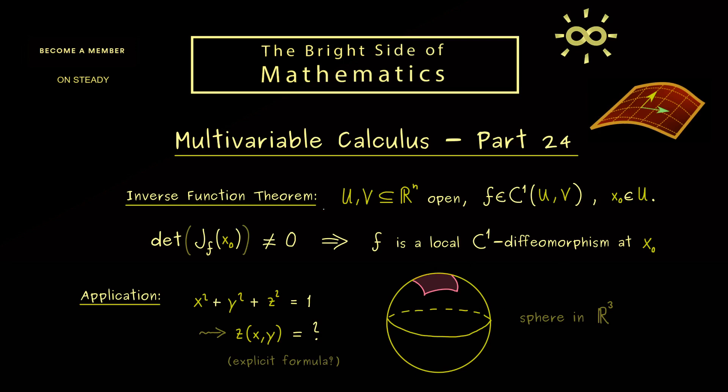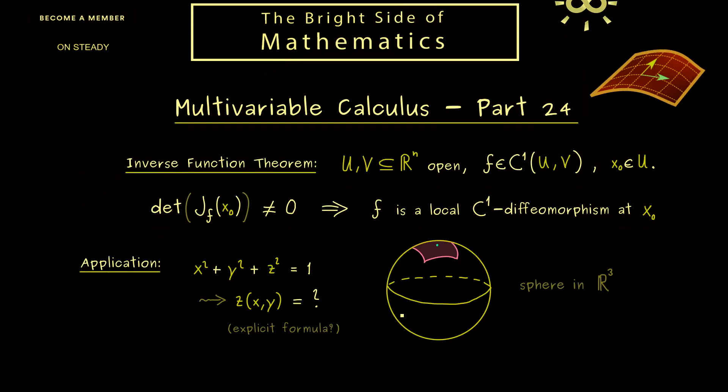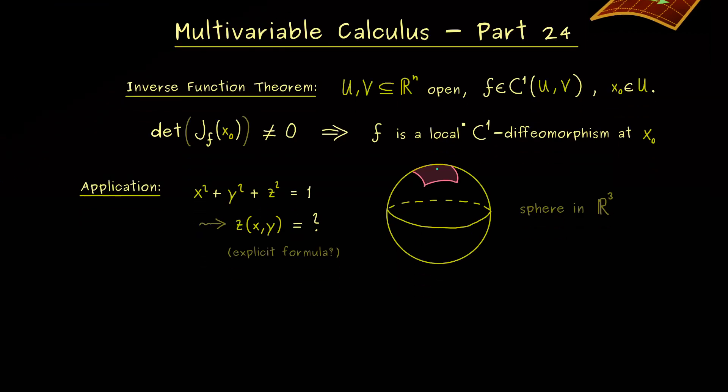So for example, we could just ask, does it work around the north pole here? So you already see, the inverse function theorem here could be helpful. But in order to apply it, we first need to find the correct function f. And then for this function f, we want to find a local C1 diffeomorphism at the point (0,0,1).